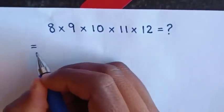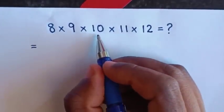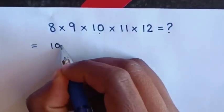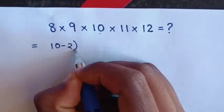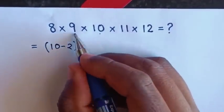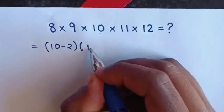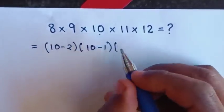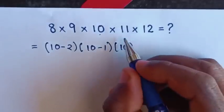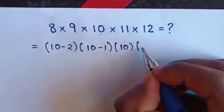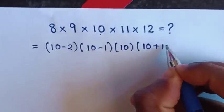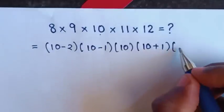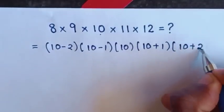So this is equal to — here we make 10 common. So 8 is the same as (10 minus 2), times 9 which is the same as (10 minus 1), times 10, times 11 which is the same as (10 plus 1), times 12 which is the same as (10 plus 2).